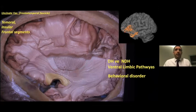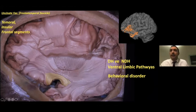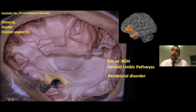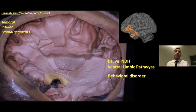The uncinate fasciculus, also called the frontotemporal fascicle, can be examined in three parts: temporal, insular, and frontal segments. It originates from the temporal horn and the cortical nucleus of the amygdala, proceeds to the limen insulae, and running under the lentiform nucleus and the IFOF, projects to the lateral orbitofrontal areas. In both the dominant and non-dominant hemispheres, it joins the ventral limbic pathway and is thought to be related to behavioral disorders.